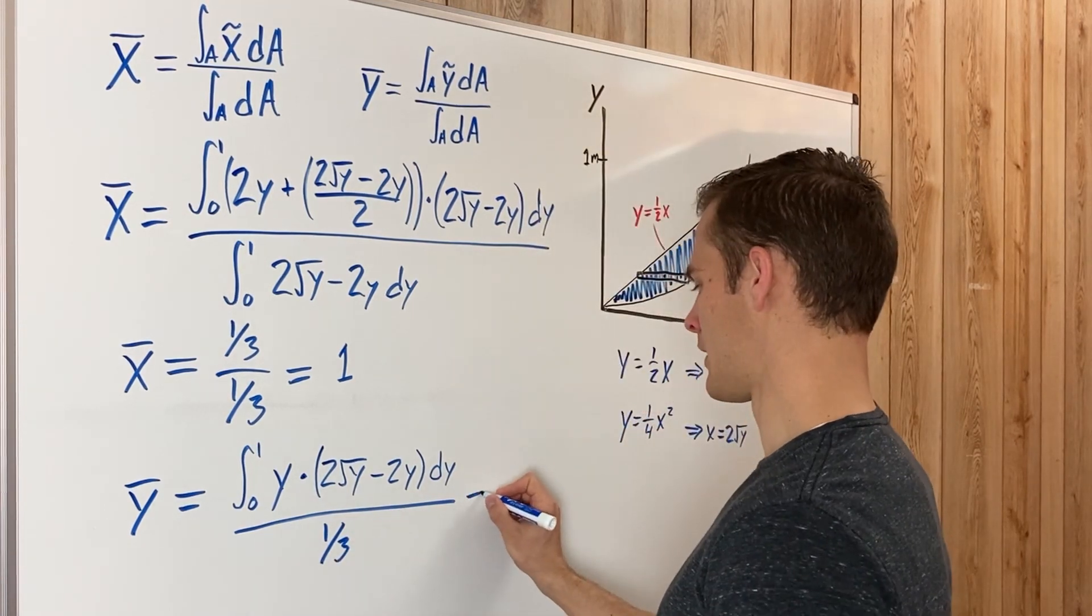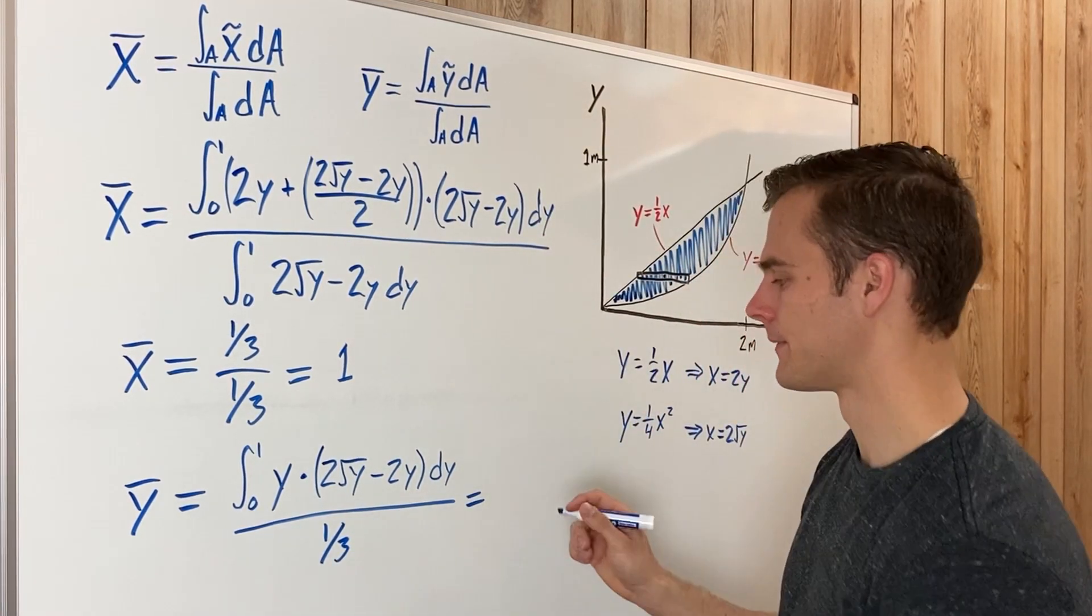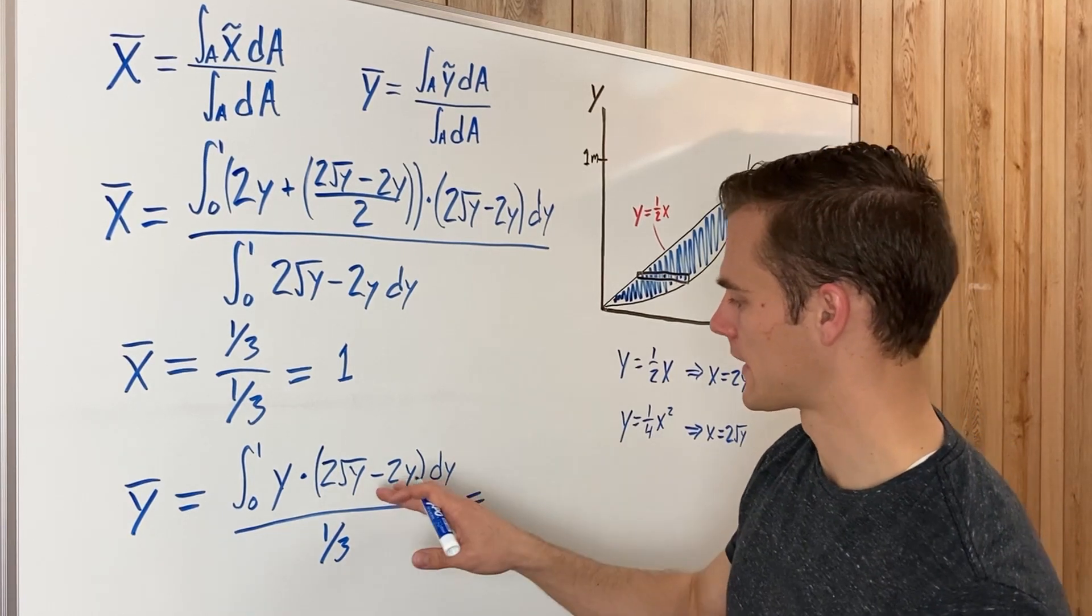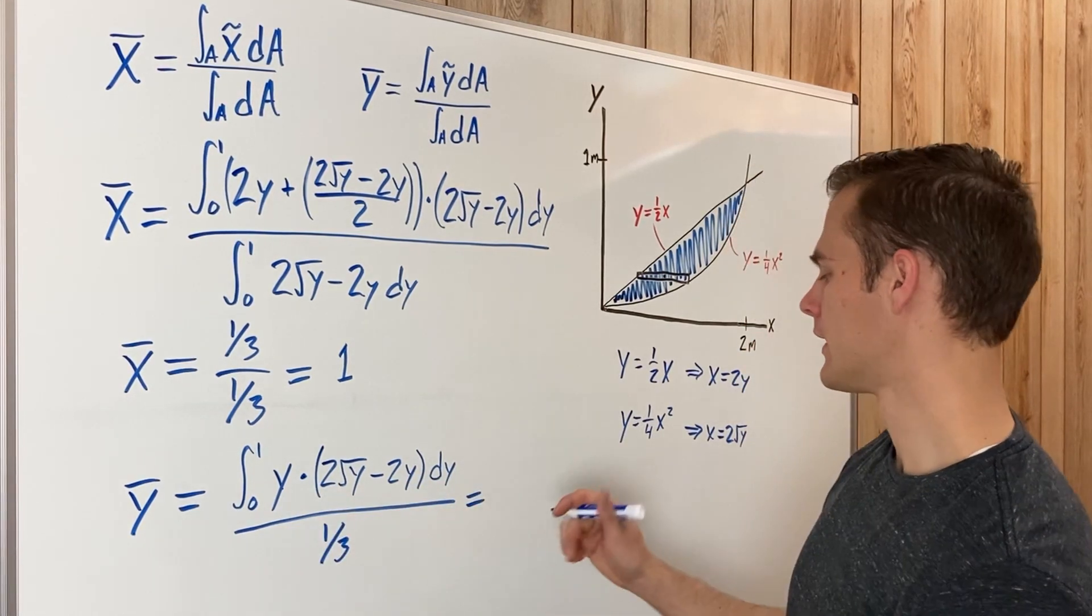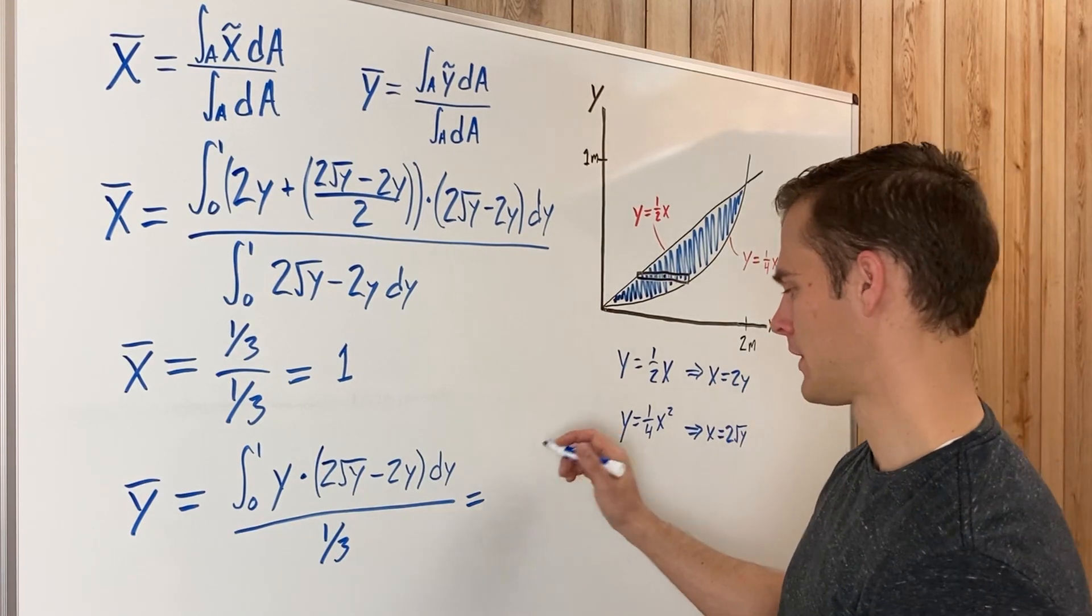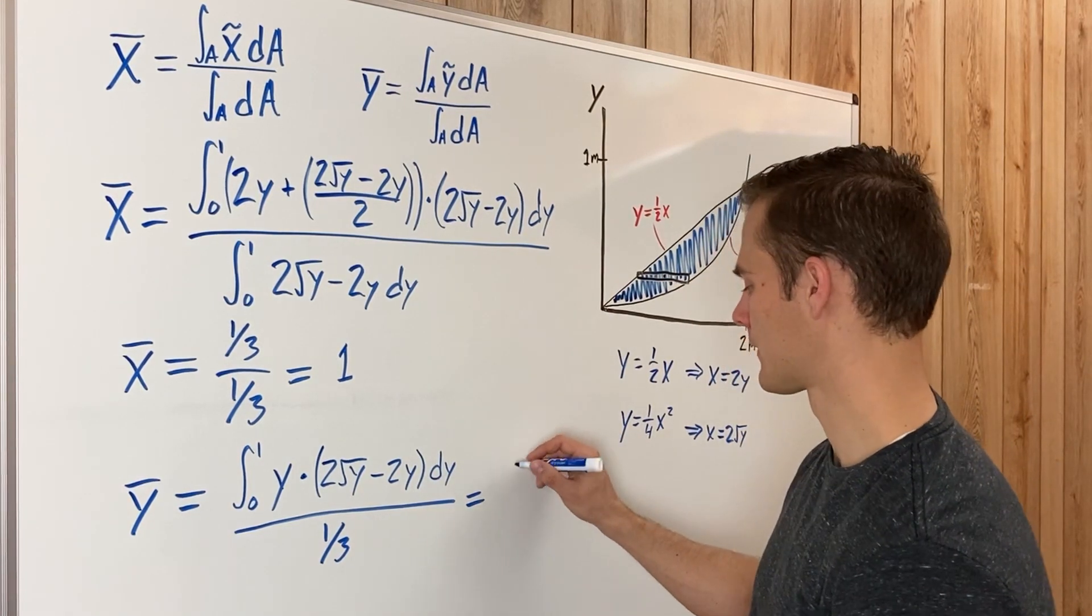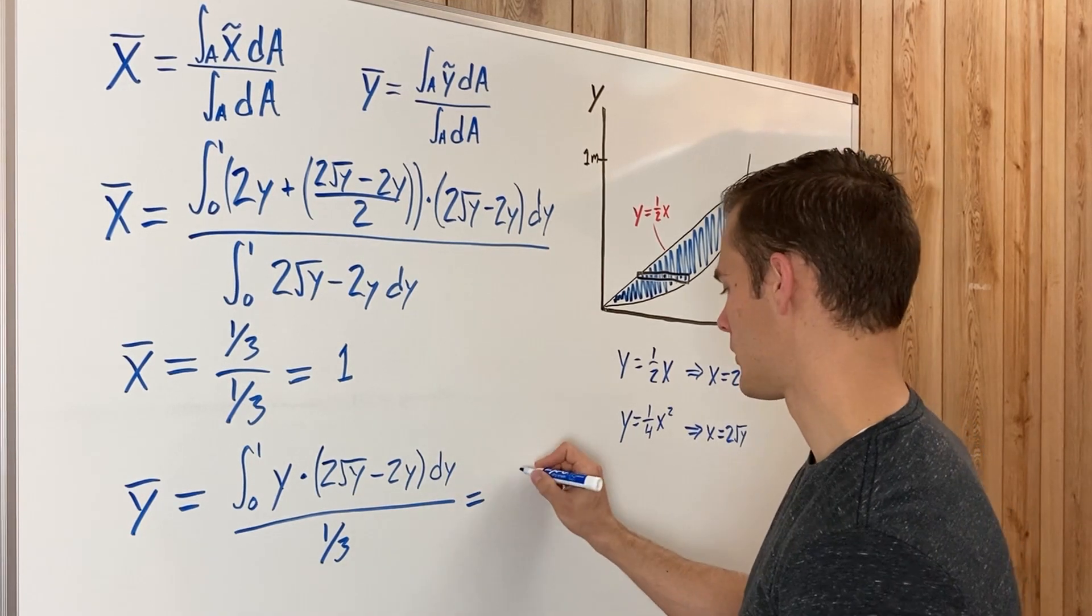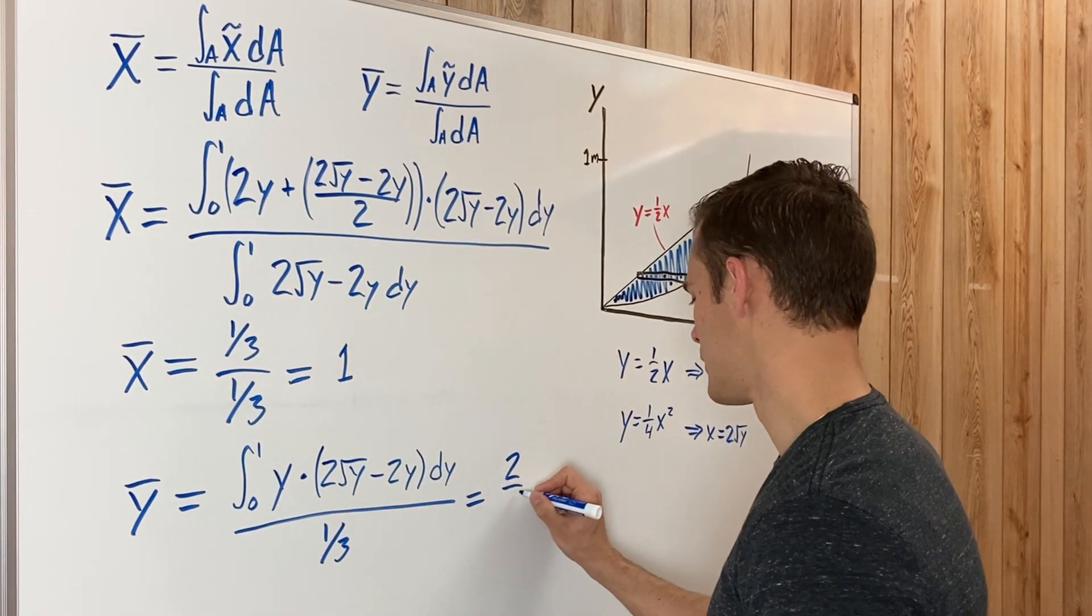And this one's not a really very complicated integral either. Factor out the two, pull it out of the integral and multiply that Y through. And doing that you end up getting that Y bar equals two fifths.